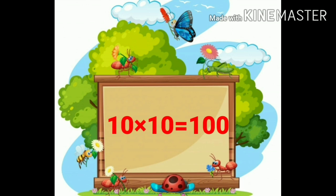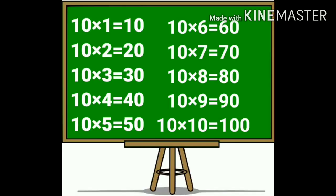Ten ones are ten. Ten twos are twenty. Ten threes are thirty. Ten fours are forty. Ten fives are fifty. Ten sixes are sixty. Ten sevens are seventy. Ten eights are eighty. Ten nines are ninety. Ten tens are hundred.